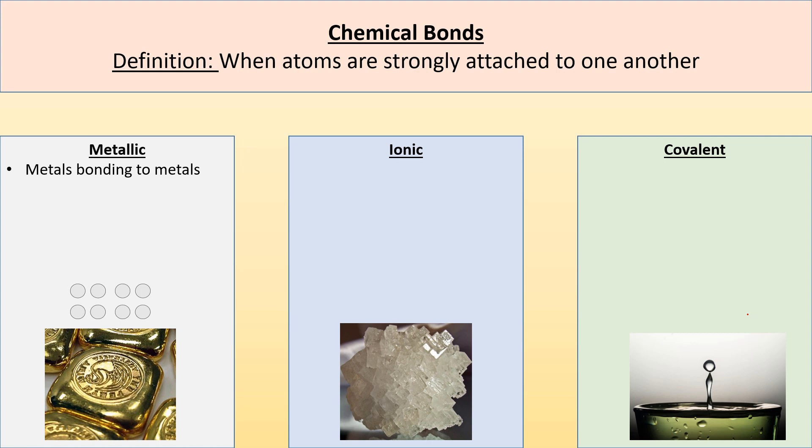So metallic bonds occur between metal atoms, metals bonding to metals. And the reason they're bonded together is because of these communal electrons that travel throughout the whole solid. So if we had some electrons here, they're not stuck just around one of those atoms, they travel throughout the whole solid.